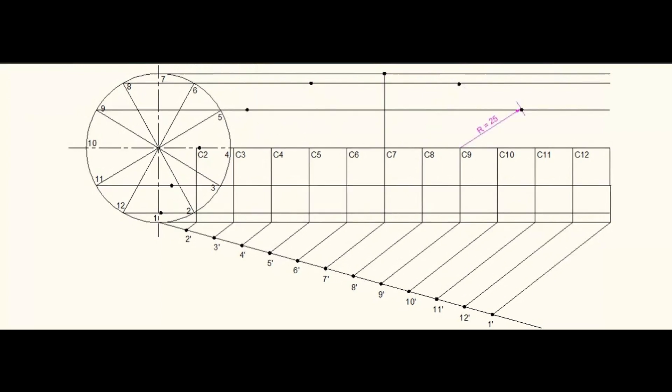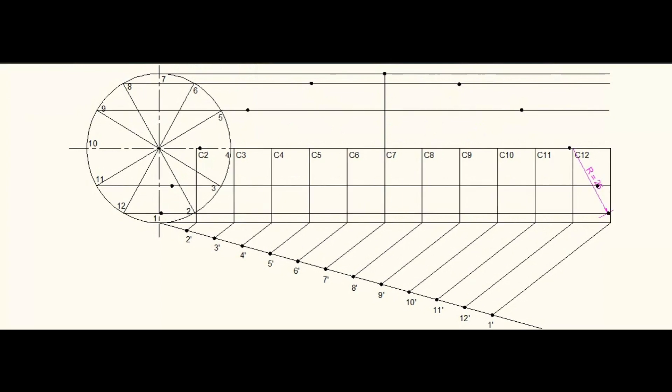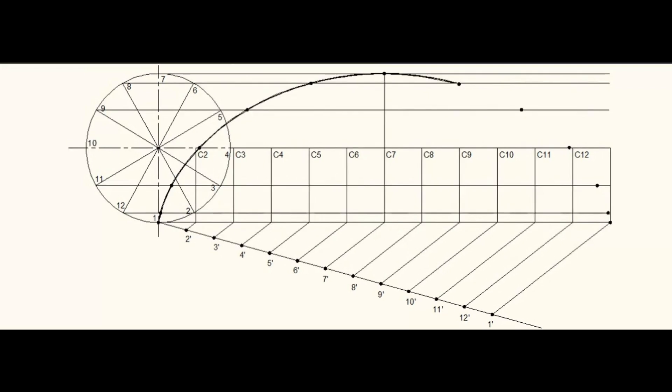These are the locus of the point on the periphery of the circle. Join these points with a smooth curve. This curve is a cycloid.